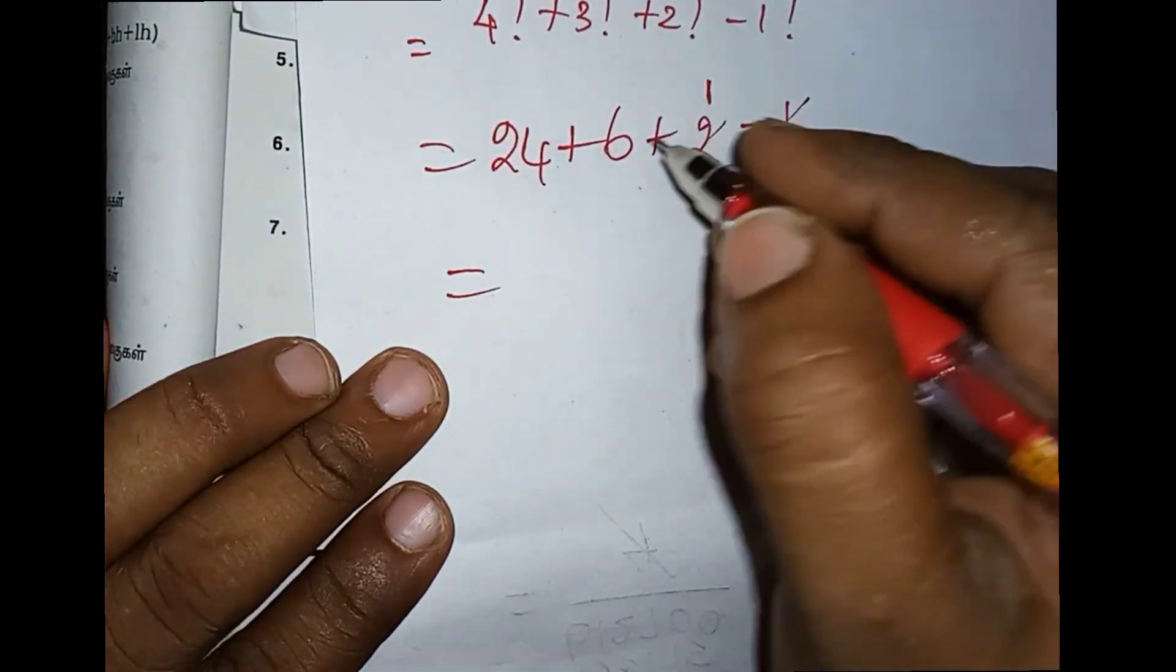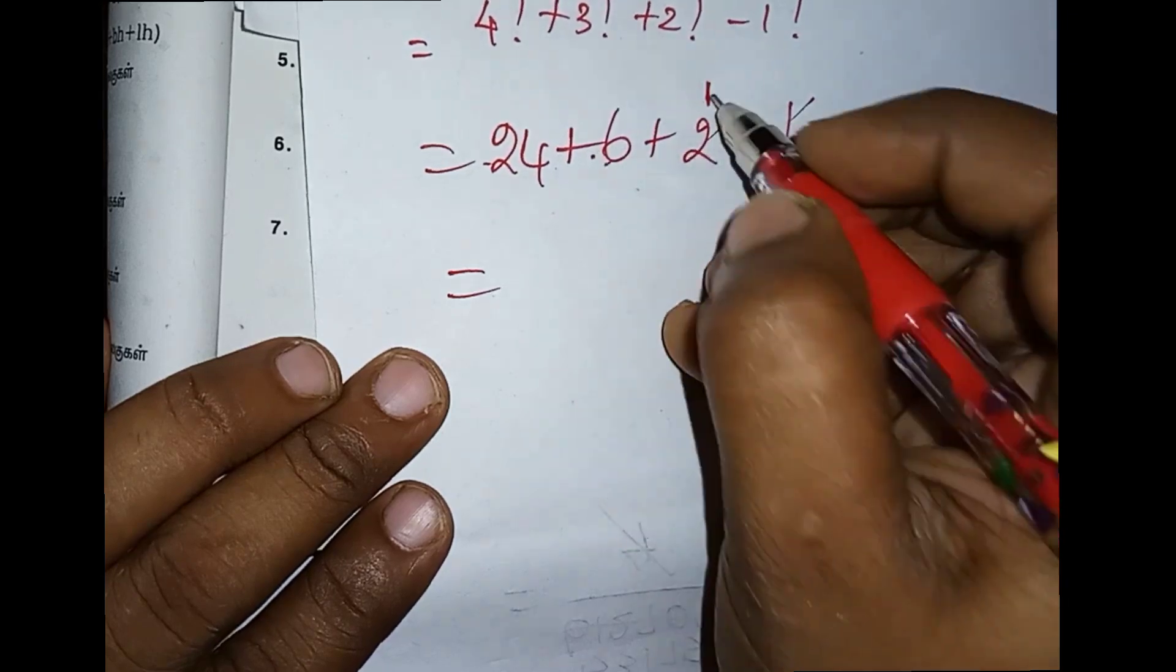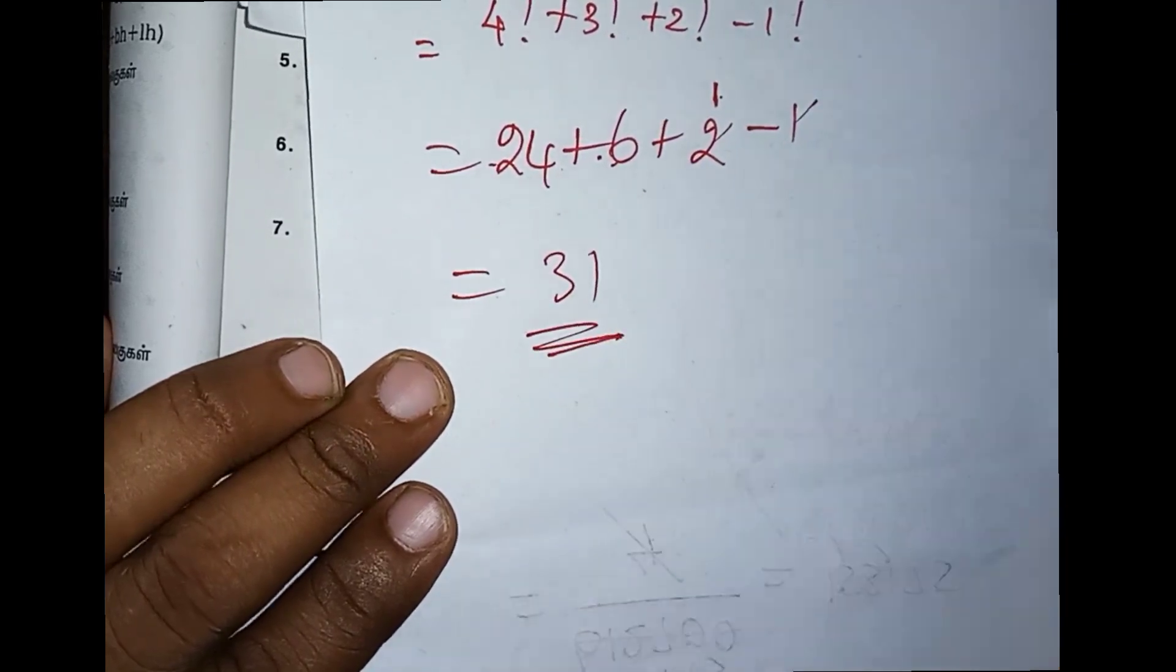24 plus 6 equals 30, 30 plus 2 equals 32, minus 1 gives us 31 as the answer.